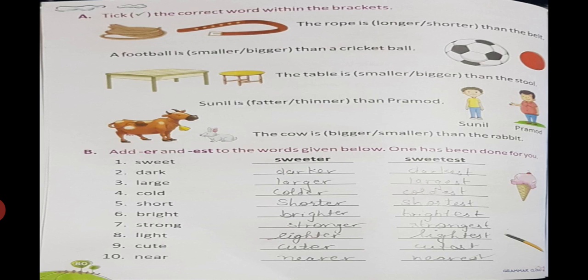Next, part A: tick the correct word within the bracket. The rope is dash than the belt. Now, how many things are being compared? Only two. So what will come? The one with er. The rope is longer or shorter. The rope is longer than the belt. A football is smaller or bigger than a cricket ball. Quite obvious, it's right in front of you. The ball is small, the football is big, so bigger will come.